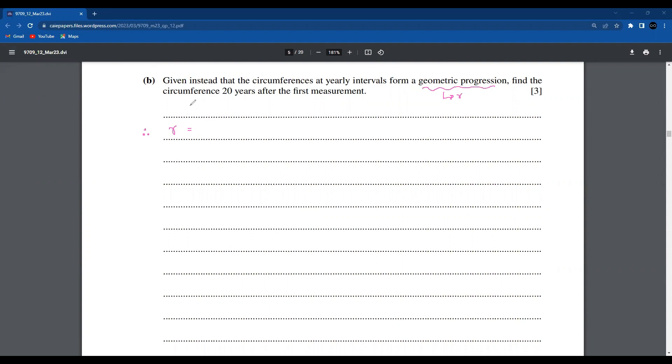We have 5 and 5.02, so the common ratio will be 5.02 divided by 5, which equals 1.004 if you use your calculator. Now we know that the value of a is 5.02 and n is 20. If you consider n as 21, remember that a will be 5, not 5.02. Now we have to find the nth term.